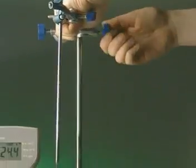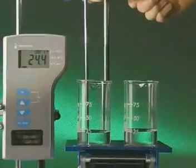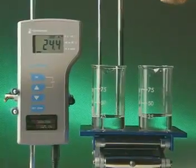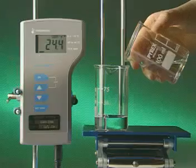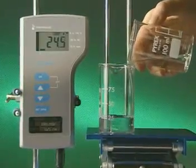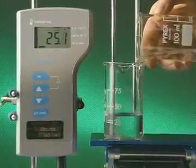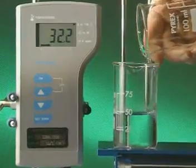An electronic probe measures the temperature change. The reactants start off at 24.4 degrees Celsius. Add them together and the temperature of the reaction mixture quickly rises.